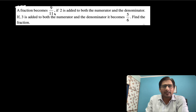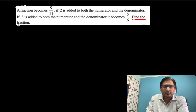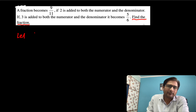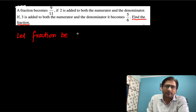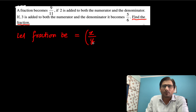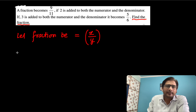A fraction becomes 9 by 11. First of all, what we need to find in this question is the fraction. We let the fraction be x upon y. So the fraction is x upon y, where the numerator is x and the denominator is y.